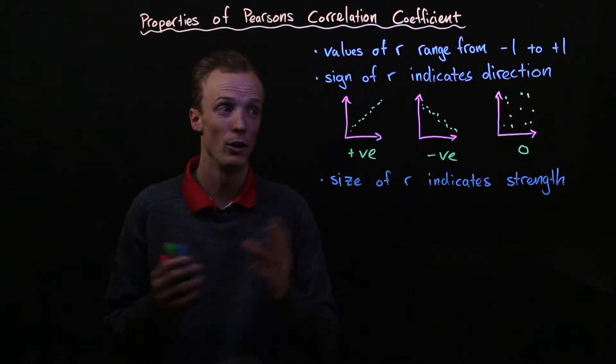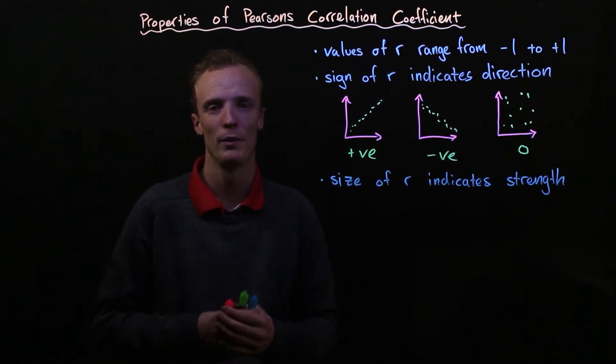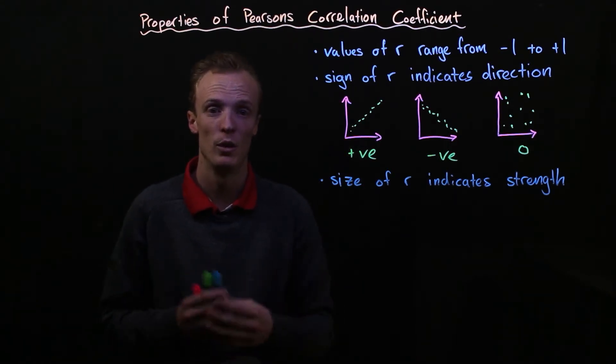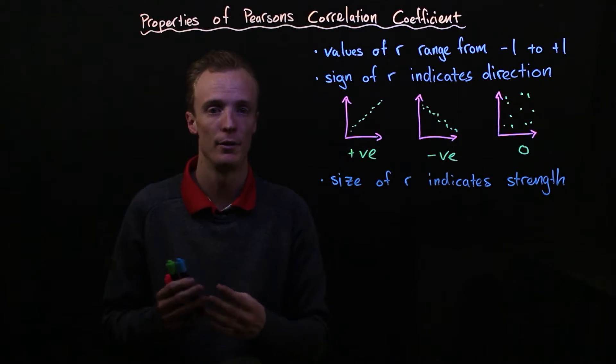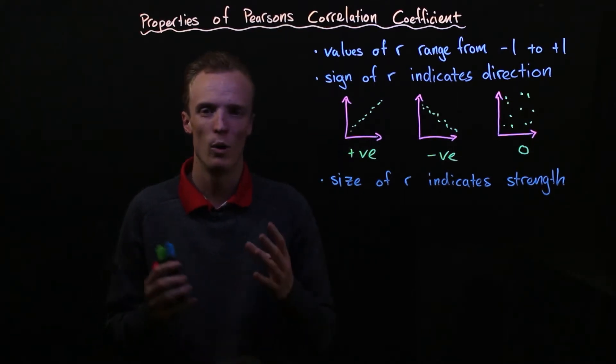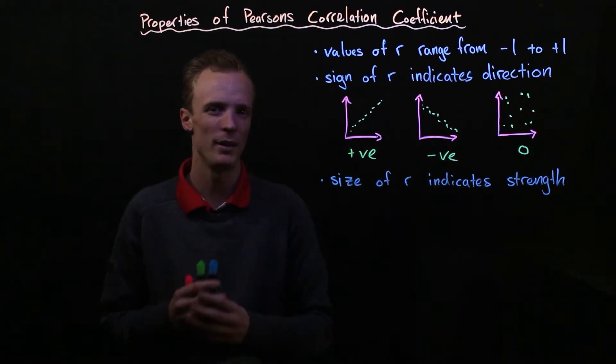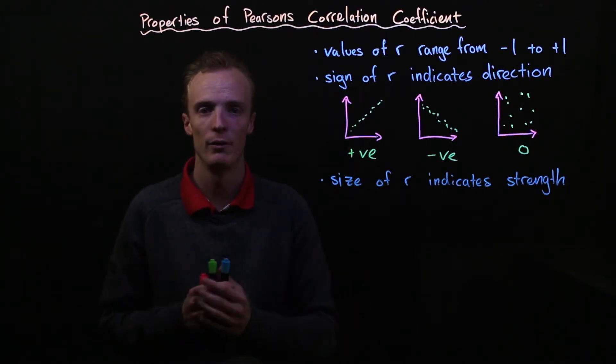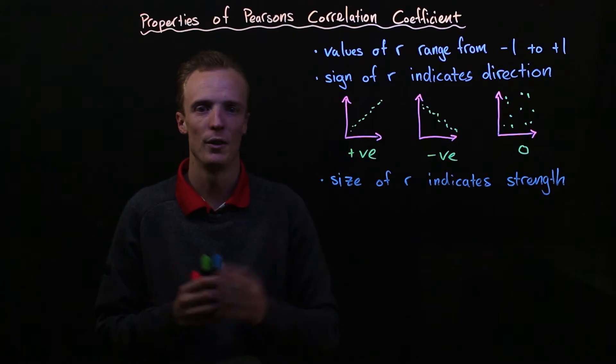But if it was very close to negative one or very close to positive one, let's say from 0.95 through to one or negative 0.95 through to negative one, whilst it isn't perfect, we would say there is a very strong correlation, whether it be positive or negative, between those variables.